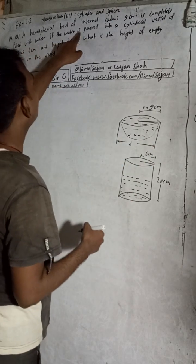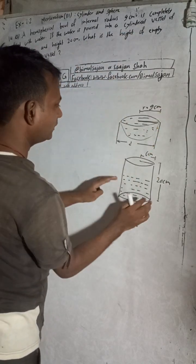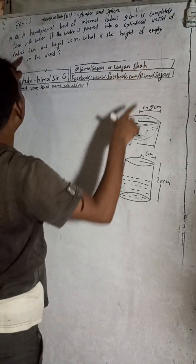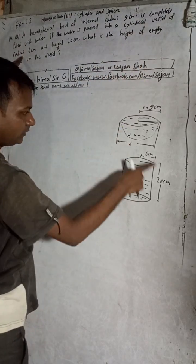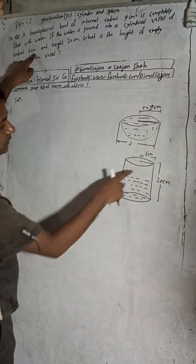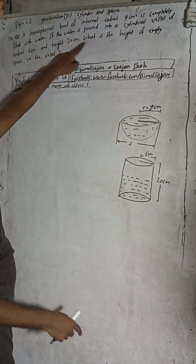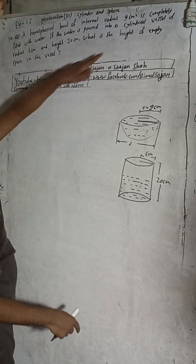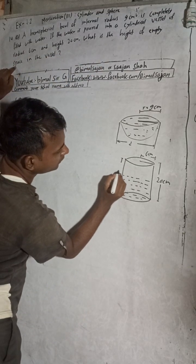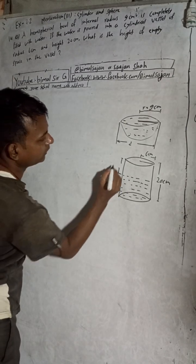If the water is poured into a cylindrical vessel, the radius of the cylinder is 6 cm and its height is 20 cm. We have to find the height of the empty space remaining in the cylindrical vessel after the water is poured in.